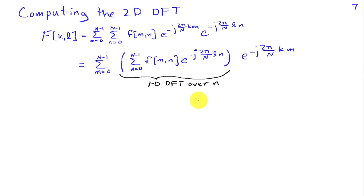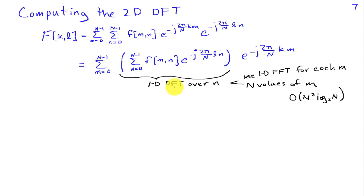For computing the 2D DFT, if we group the sum over n and treat m as constant, the inner sum looks just like a one-dimensional DFT over the n variable. We can implement that using an FFT algorithm for each value of m, giving N log 2 N per FFT and capital N of those FFTs, for a total computational complexity of N squared log 2 N.